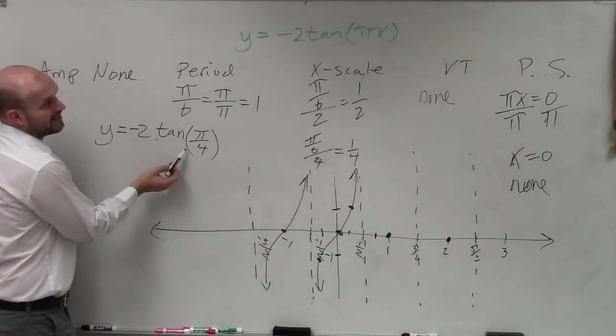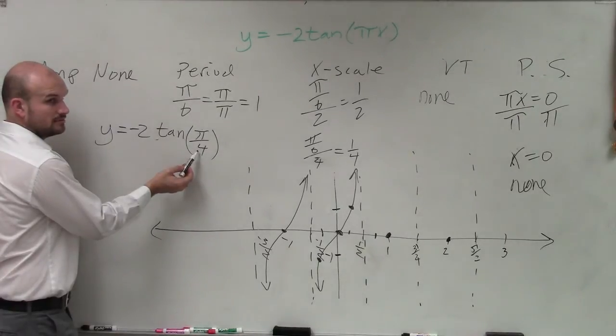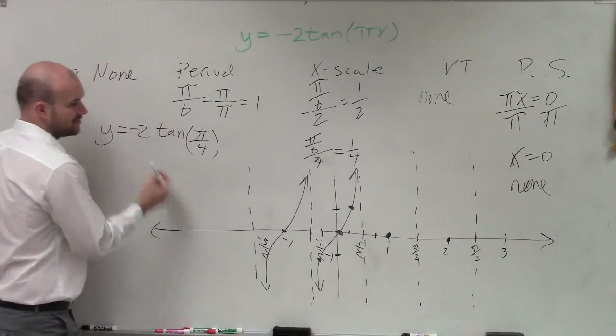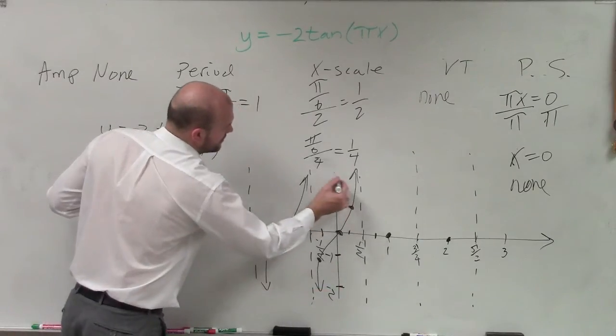And if I go ahead and evaluate this, if I plug this in, tangent of pi over 4 is what? 1, yes, times negative 2. So that means now these points go down to negative 2 and positive 2.